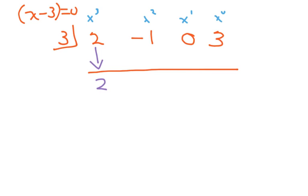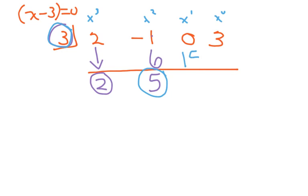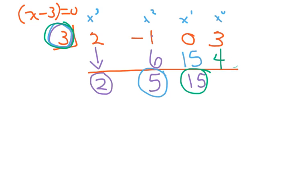Multiply and add. So we're going to multiply 3 times 2, which gives me 6, and I'm going to add: negative 1 plus 6 is 5. Now multiply 3 times 5 is 15, and add: 0 plus 15 is 15. Then multiply 3 times 15 and get 45, then add: 3 plus 45 gives you 48.